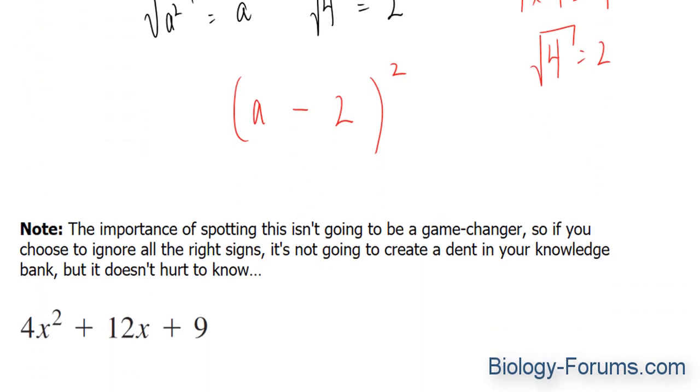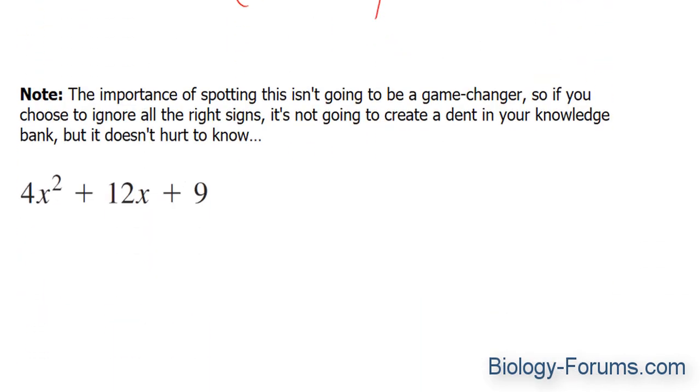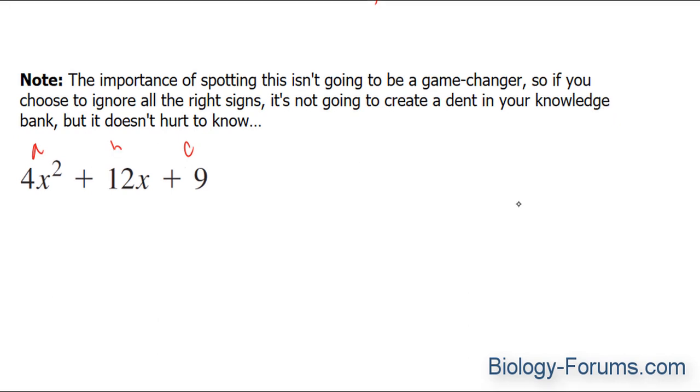Let's do one more example, and in this case we have 4x squared plus 12x plus 9, and let's find out if the a and c term are square rootable. The square root of 4x squared is 2x. That passes the first test.